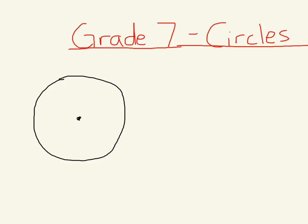Excuse the rough edges on the circle — my hand must not have been very steady. We've got a circle here and I want to label a few parts. From the center of the circle, if we drew a straight line out to the outside — meaning we've got half of the distance across the circle — that term has a special name, and that name is the radius. The radius is halfway across the circle, or from the center out to the actual circle.